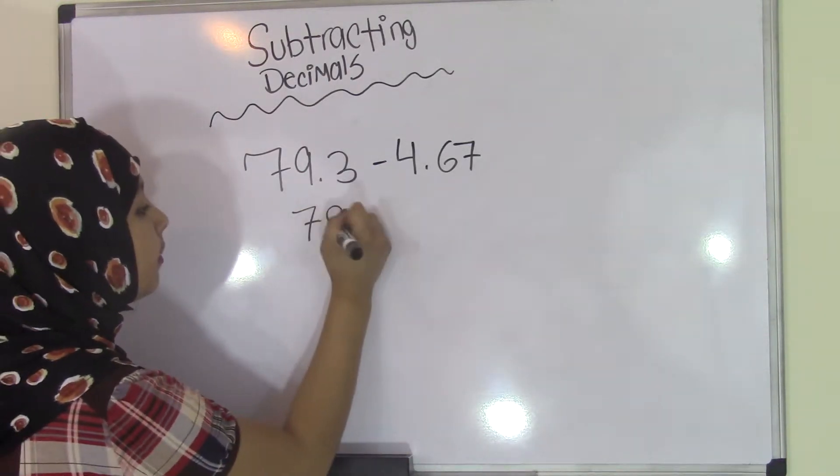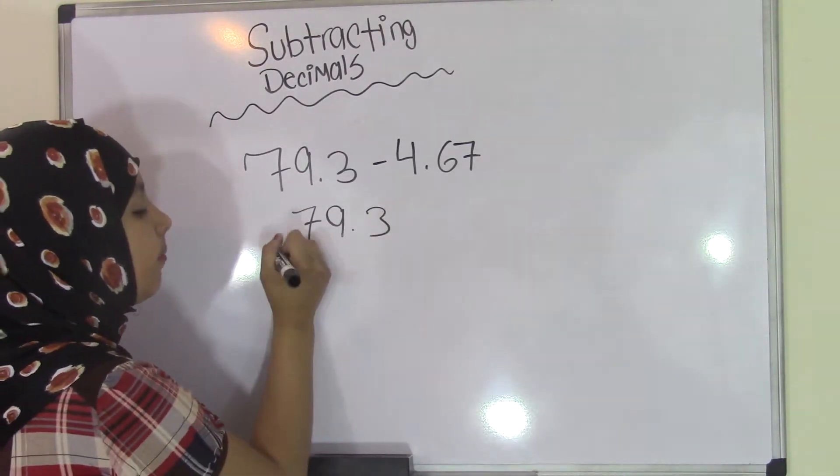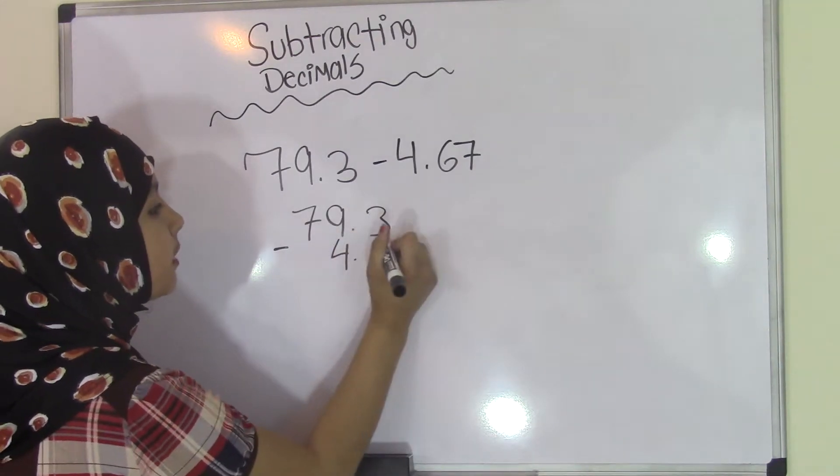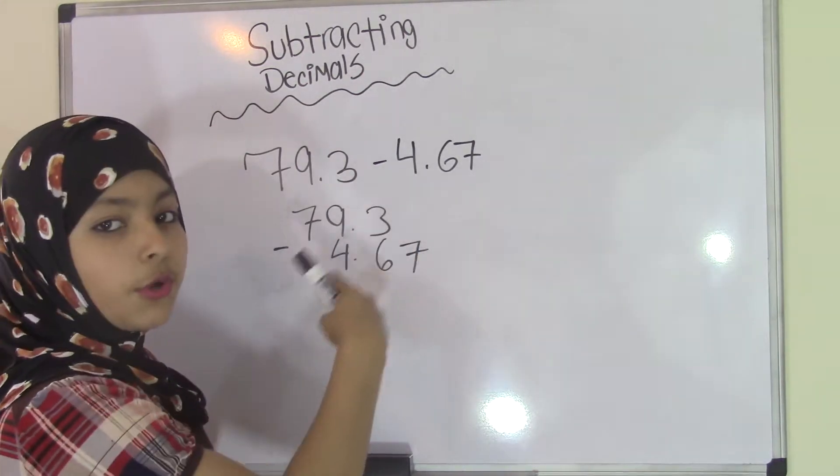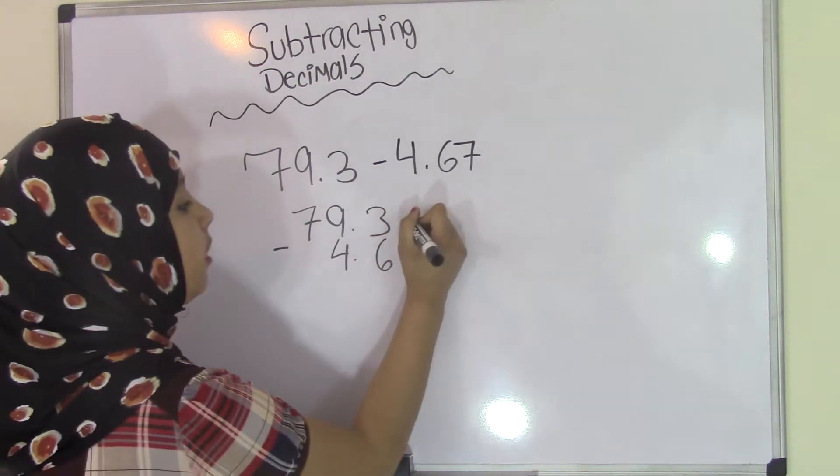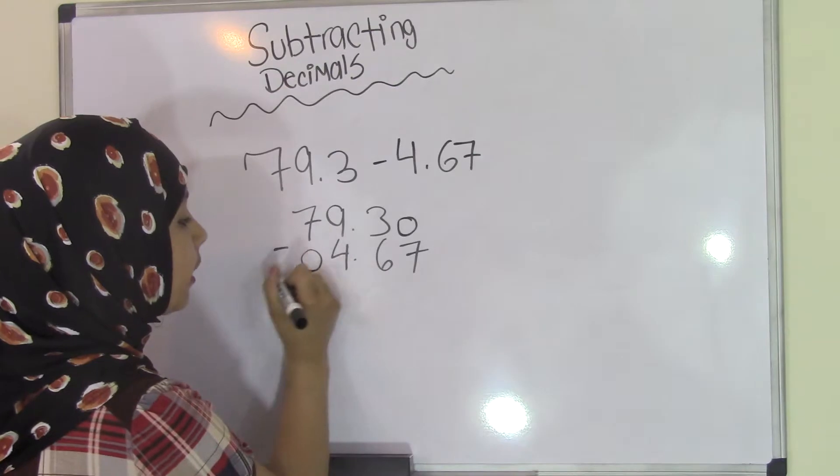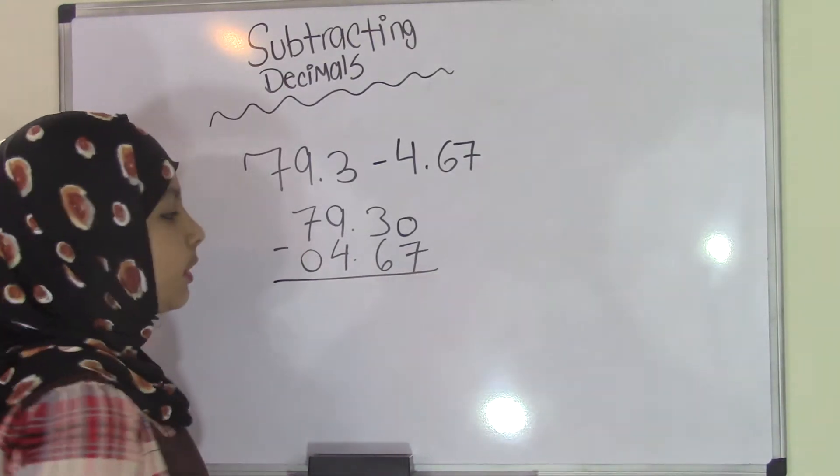So, that means this will become 79.3 minus 4.67. Now, to make this less complicated, just add zeros where there are no digits or numbers. So, you just add a zero here and a zero here, and now all you do is do simple subtraction.